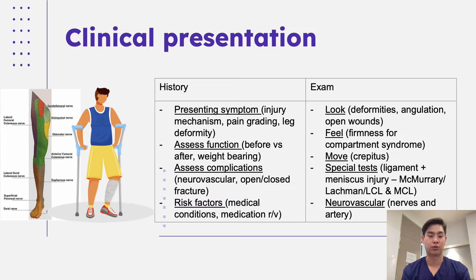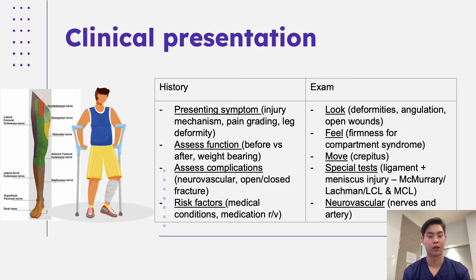With regards to the workup of a patient coming in with a suspected fracture, we're looking at it from the history and examination perspective. When looking at presenting symptoms, we identify whether they have any acute leg pain and try to ascertain the specific mechanism — whether that's a high velocity incident or a fall. We then look at pain grading, any leg deformity, and assess function: how much can they weight bear, and what was their function before versus after the incident.